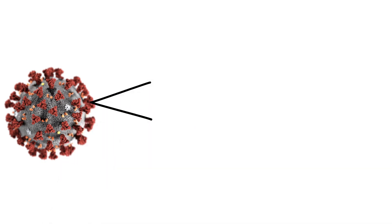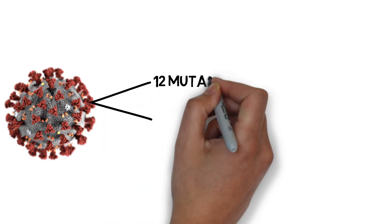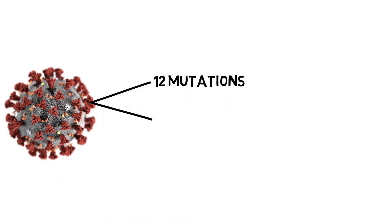This Brazil variant features 12 mutations in the spike protein region. What this means is that some of the building blocks, i.e. amino acids, that make up the spike protein have been replaced by different amino acids, many of these being similar to the ones found in the already known variants, which I explain in the video linked in the description.